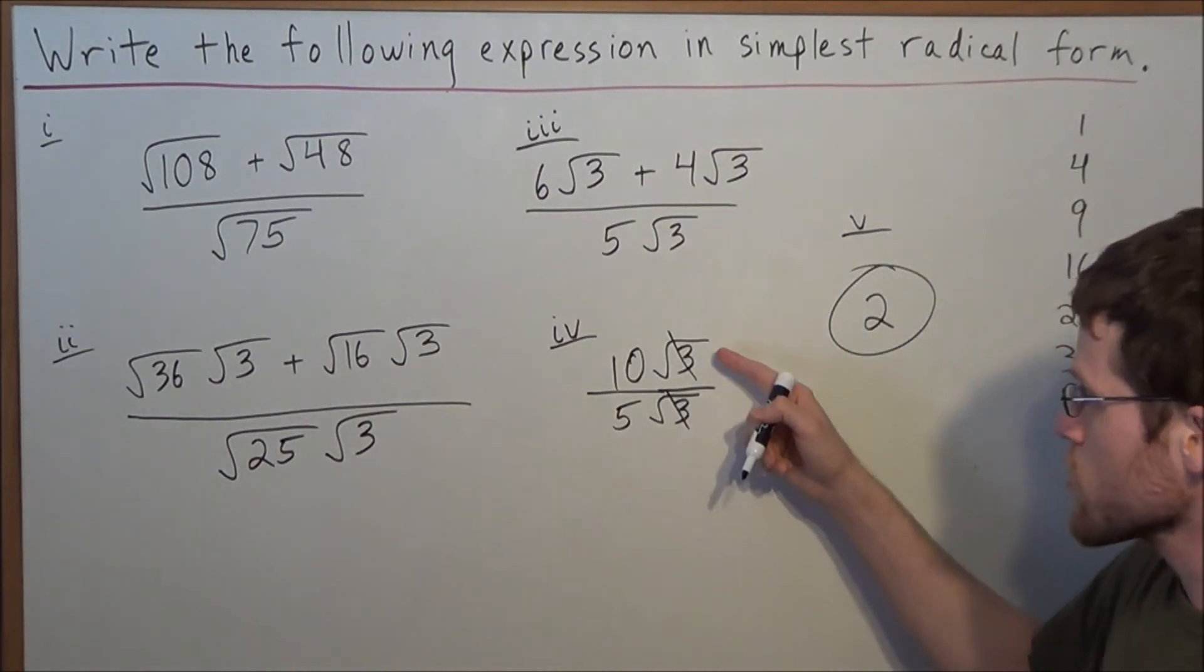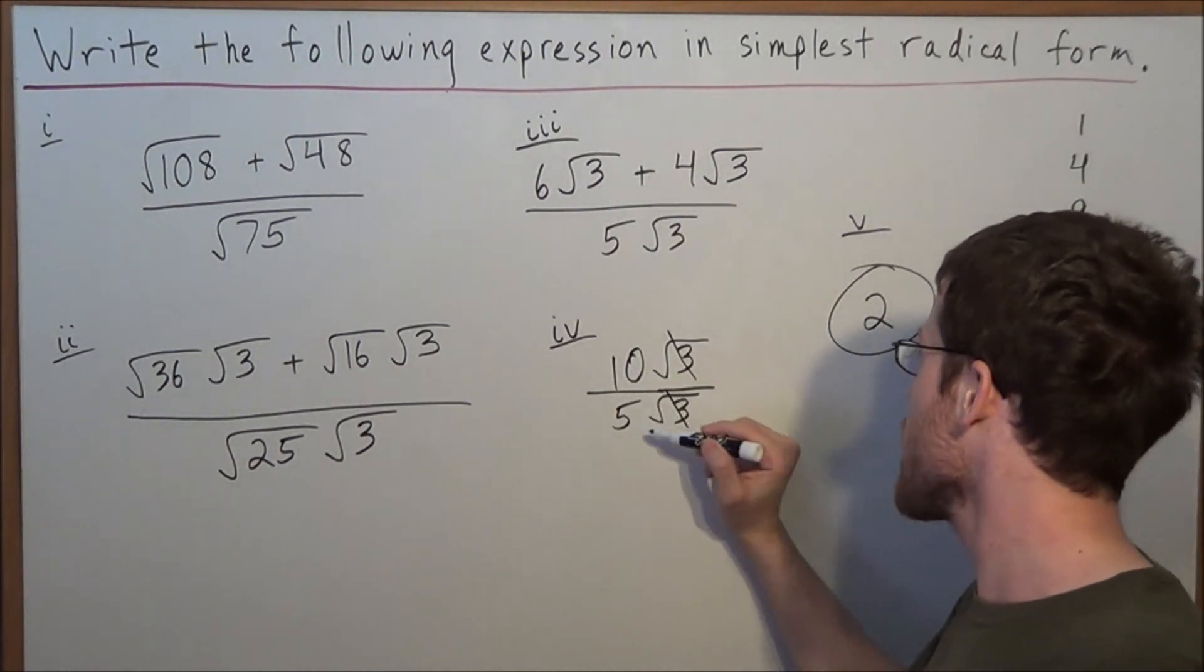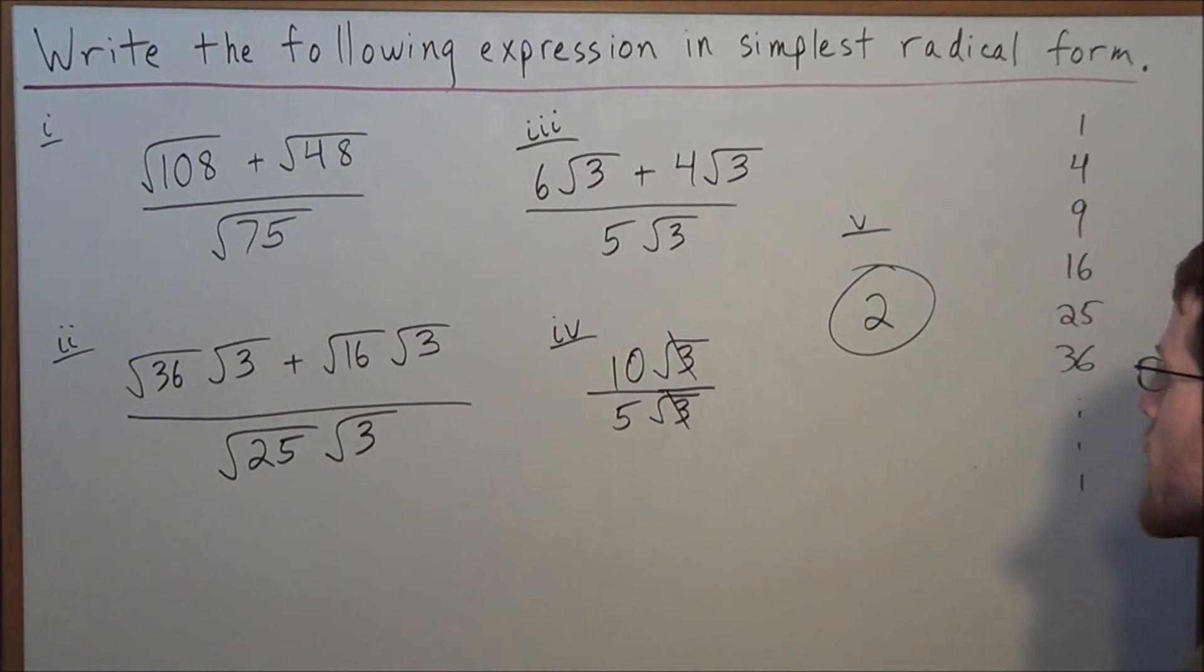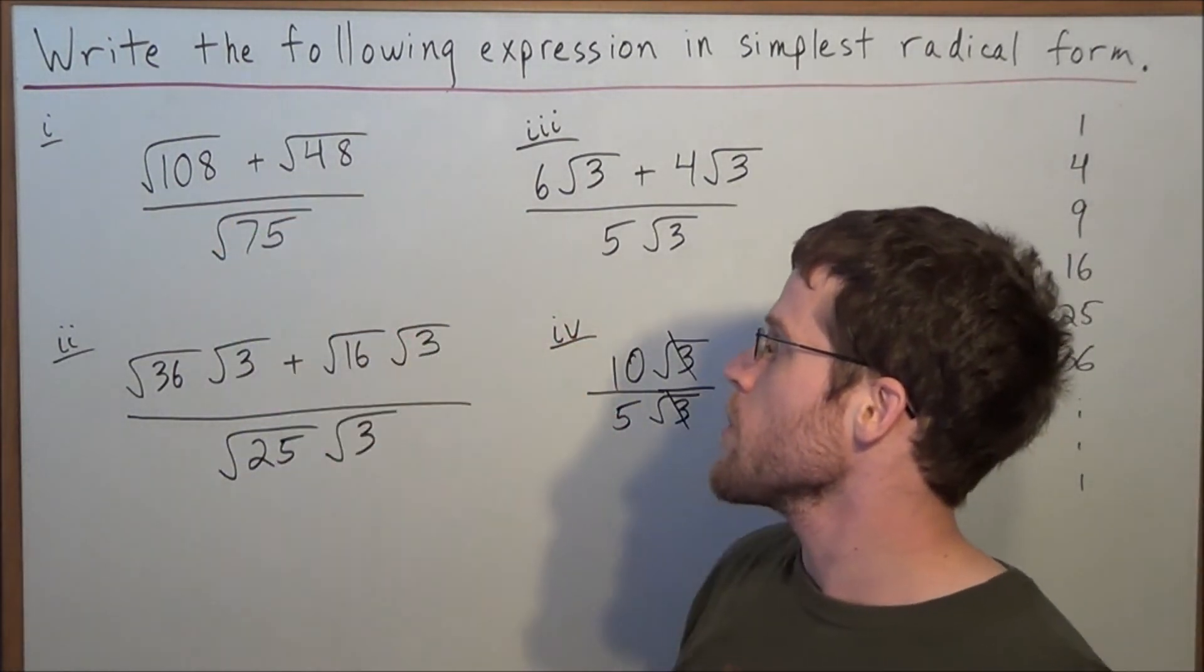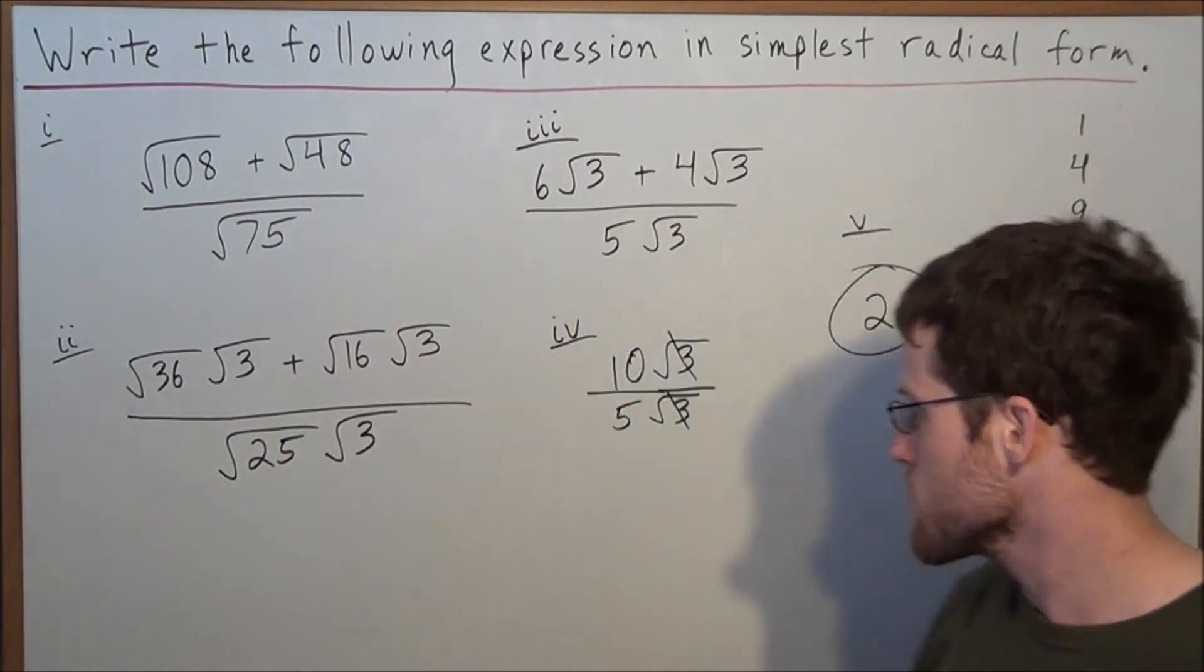Okay, so notice when there's common factors, they cancel out. And now we're looking here at 10 divided by 5 is 2. So the final answer, radical 108 plus radical 48 divided by radical 75 is simply 2.